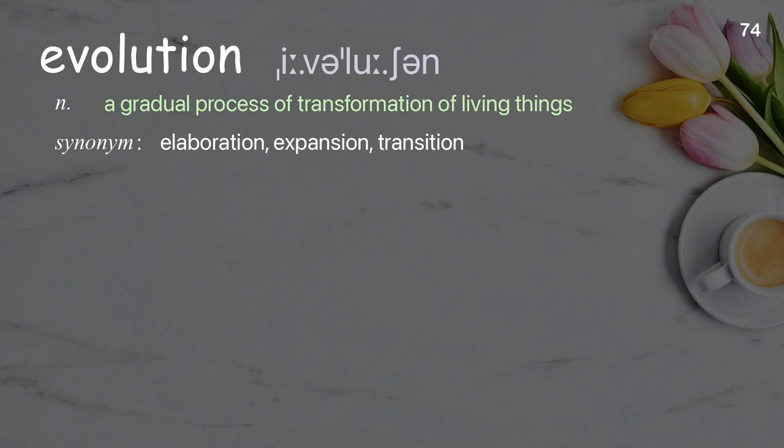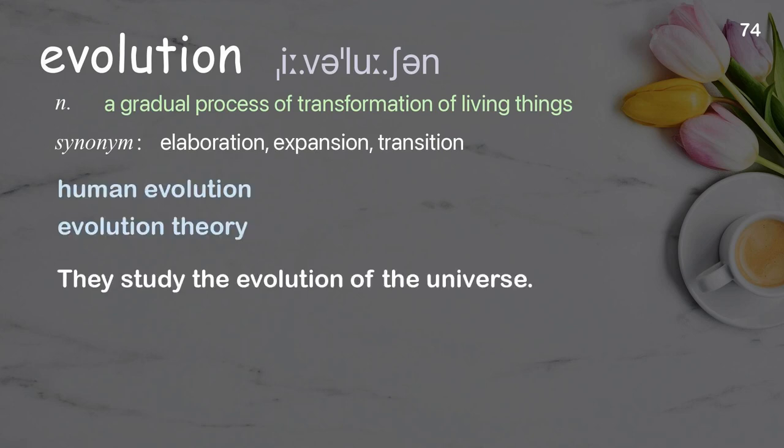Evolution. A gradual process of transformation of living things. Examples: human evolution, evolution theory. They study the evolution of the universe.